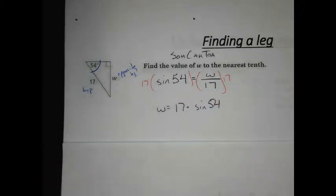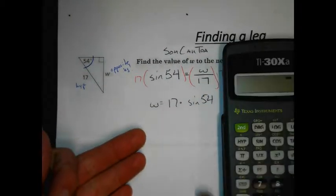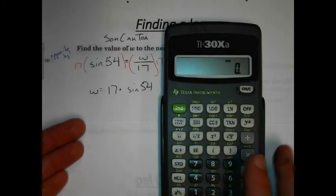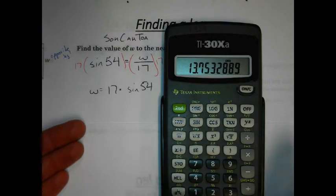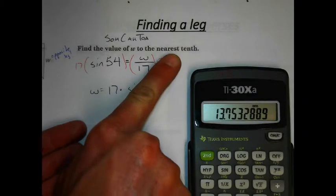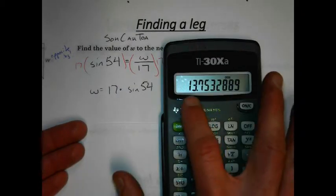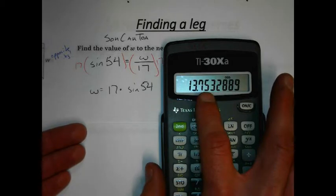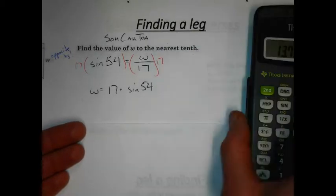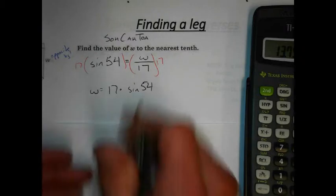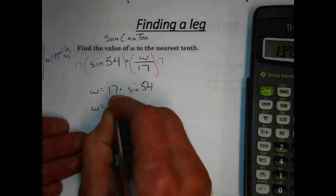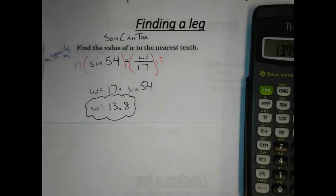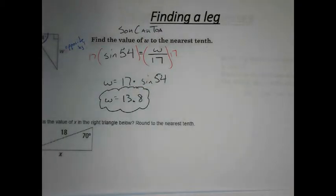That's where the handy-dandy calculator comes in. We have 17 times the sine of 54: enter 17 times, then 54, then the sine function, equals — 13.753. We're rounding to the nearest tenth. We look at our value: 13.75 — the 5 rounds the 7 up to an 8. So W equals 13.8 units. That's how using the trig function works.